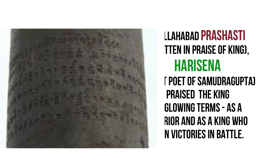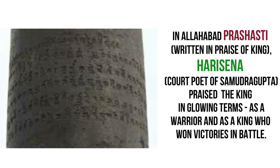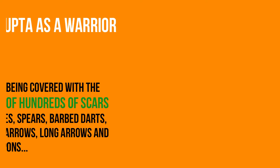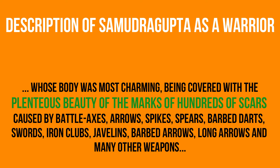The Allahabad inscription, or Samudra Gupta's Prashasti, is written in praise of the king. Harisena praised the king in glowing terms as a warrior who won victories in battle. Referring to Samudra Gupta, it says his body was most charming, being covered with the beauty of marks of hundreds of scars caused by battle axes, arrows, spikes, long arrows, and many other weapons.